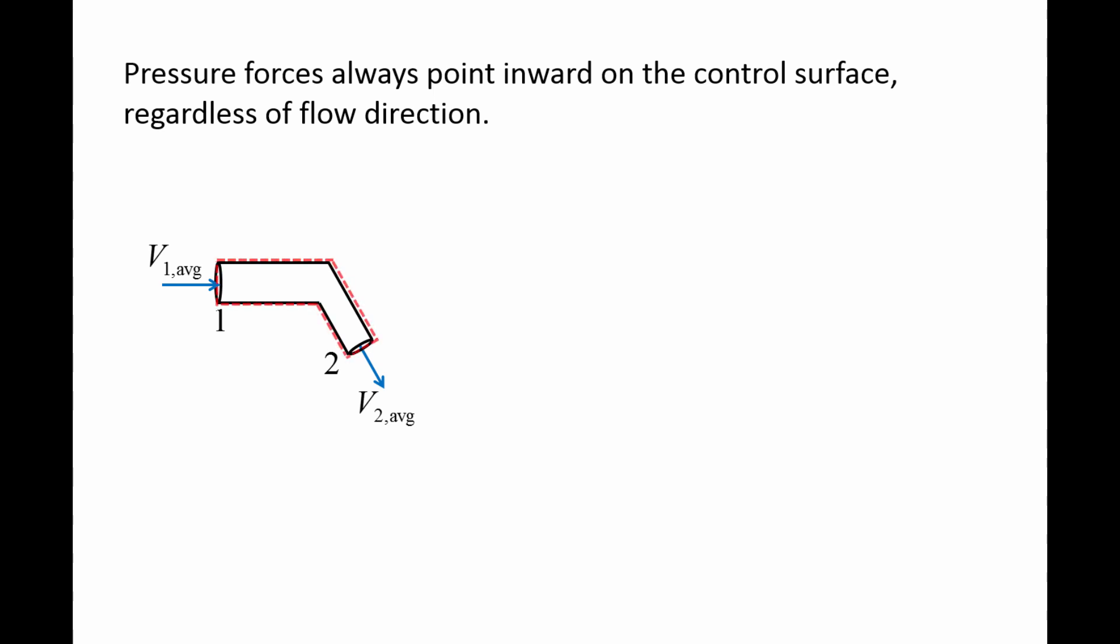We now draw a control surface around the pipe bend and identify the pressure forces on a free body diagram. Since atmospheric pressure forces cancel in all directions, we can use gauge pressure when determining the pressure forces on the control volume. The pressure force on the top and bottom sides of the bend are zero since it is exposed to the atmosphere. The only pressure forces we need to consider are at the inlet and outlet.